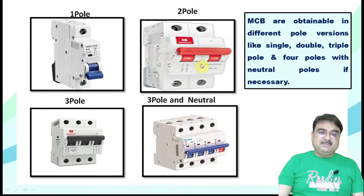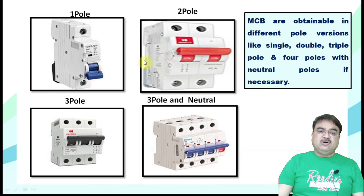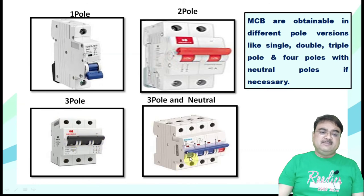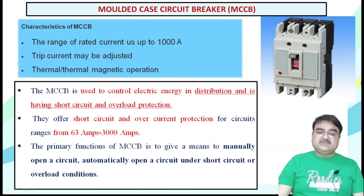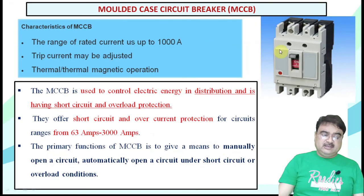You will see some switches on your main board. There is a single pole MCB, a two pole MCB, and a three pole MCB. Single pole means one wire to connect and disconnect; two pole means two wires; three pole means three wires. There is also a four pole MCB — three poles and a neutral. This is called a three-pole-and-neutral MCB.